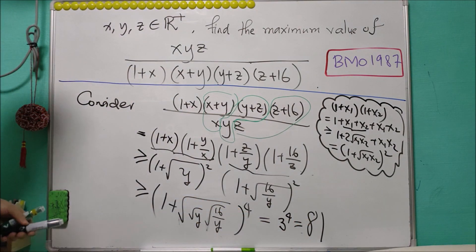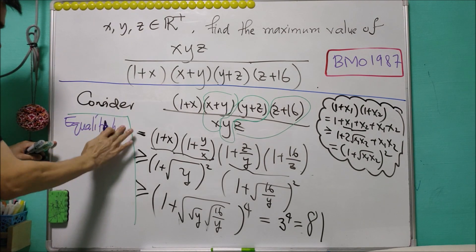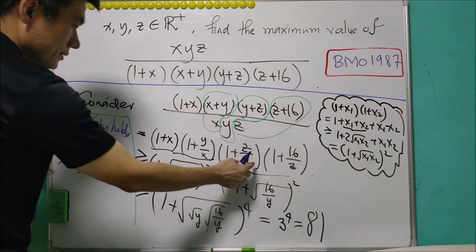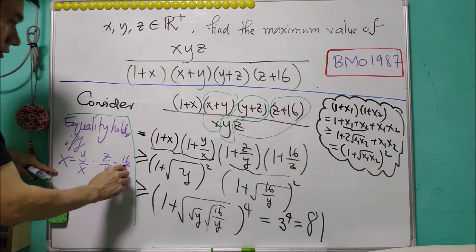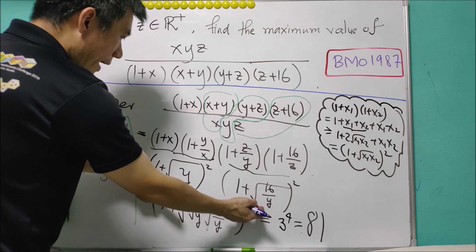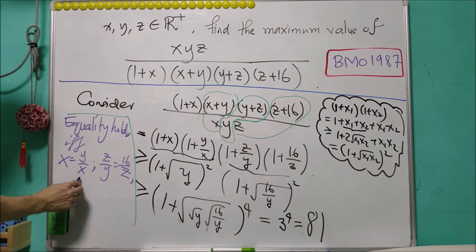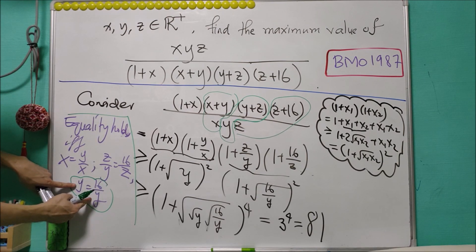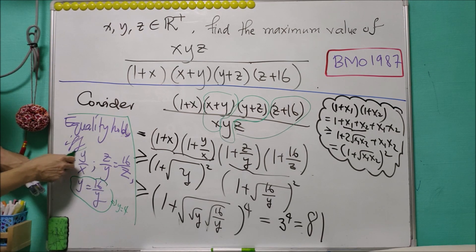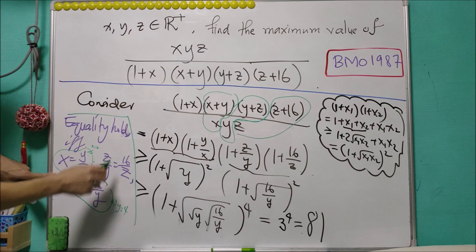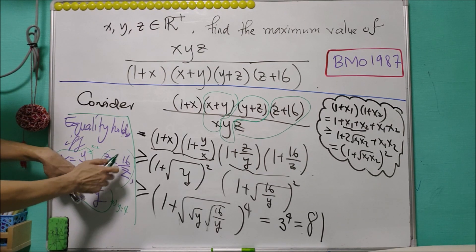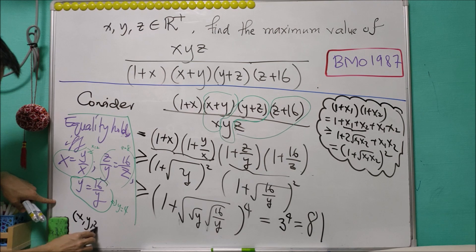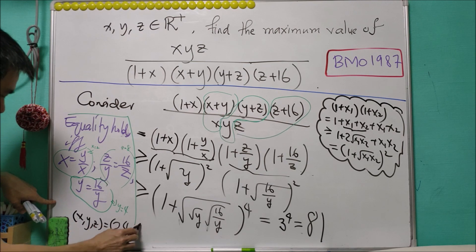We need to check whether equality holds. Equality holds if and only if X = Y/X and Z/Y = 16/Z. From these two conditions, combining gives Y = 16/Y, so Y² = 16, meaning Y = 4. If Y = 4, then X = 2. If Y = 4, then Z = 8. So equality holds at (X, Y, Z) = (2, 4, 8).